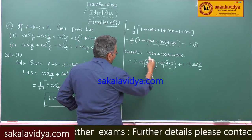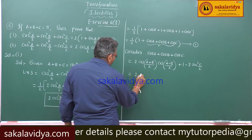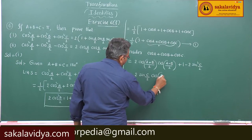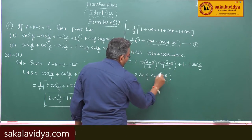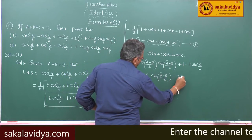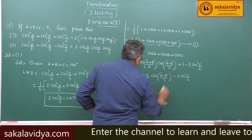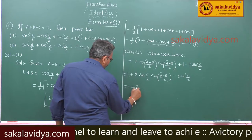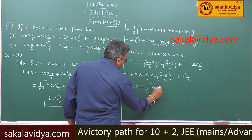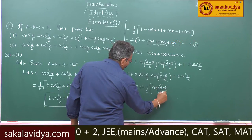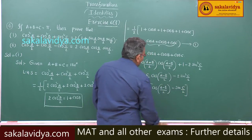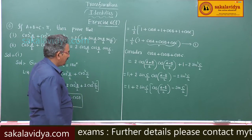Since cos of a plus b by 2 is sin c by 2, we have 2 sin c by 2 times cos of a minus b by 2. Combining, we get 1 plus 1 minus 2 sin squared c by 2, which factors as 1 plus 2 sin c by 2 times cos of a minus b by 2 minus sin c by 2. Substituting sin c by 2 as cos of a plus b by 2.